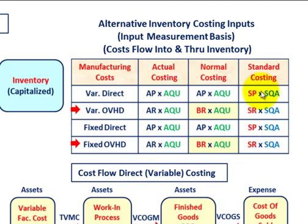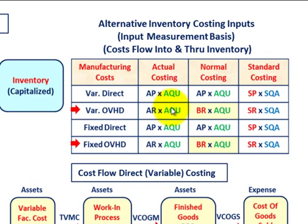Standard costing uses predetermined rates, prices, and standard quantities allowed for each of those manufacturing costs. That covers our topic here with direct or variable costing and how we handle inventory valuation.